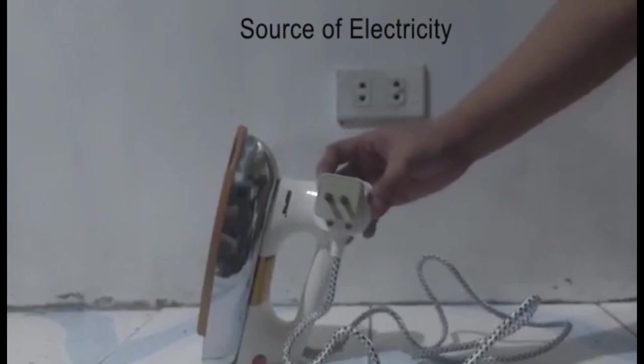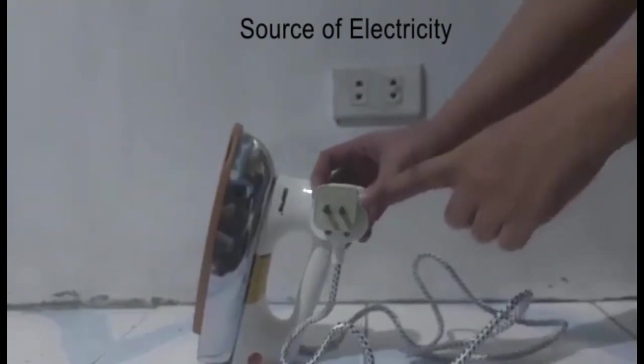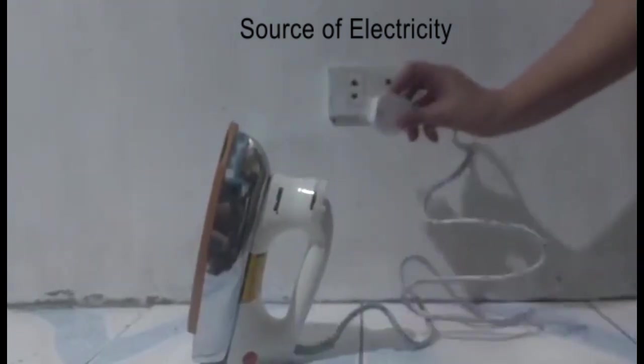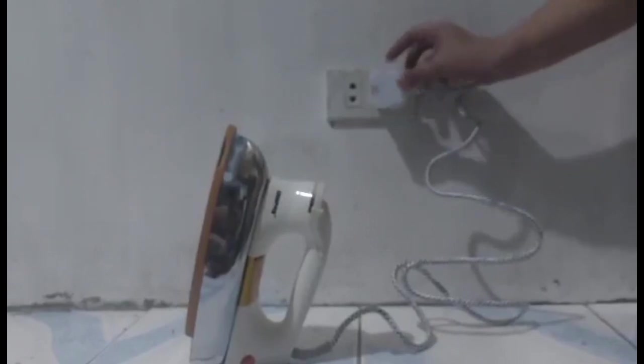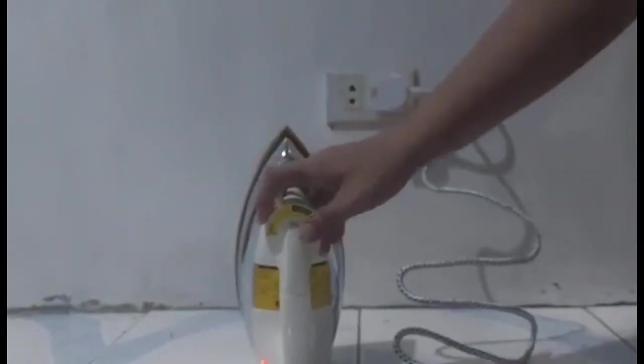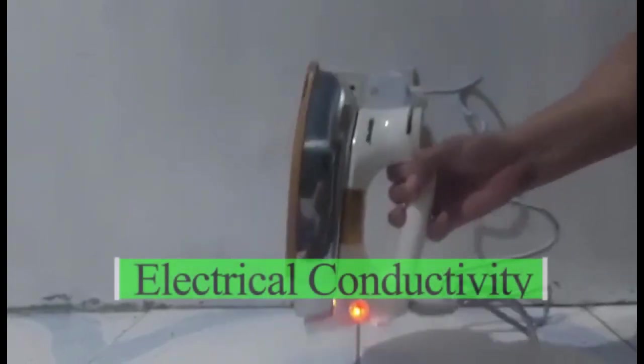When it is plugged into source, it will allow current to pass through the metal in the plug. This property of material that allows electricity to pass through is called electrical conductivity.